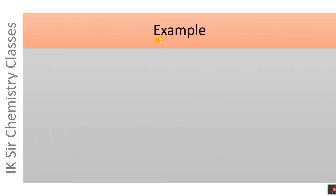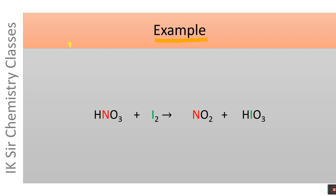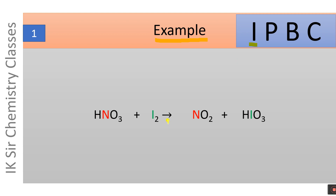Let us illustrate the oxidation number method with the following reaction: HNO3 reacts with I2 producing NO2 and HIO3. We have to balance this redox reaction by oxidation number method. Applying the first step — identifying elements undergoing change in oxidation number — the oxidation number of nitrogen decreases from +5 to +4, and the oxidation number of iodine increases from 0 to +5. We have identified the elements undergoing change in oxidation number, and now these elements are paired up.